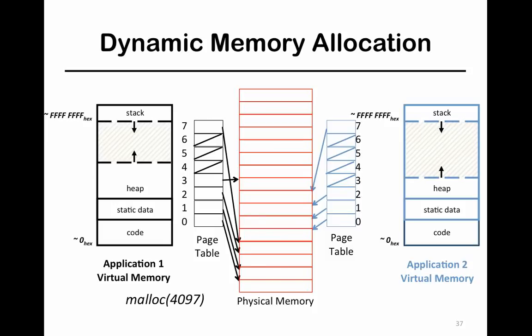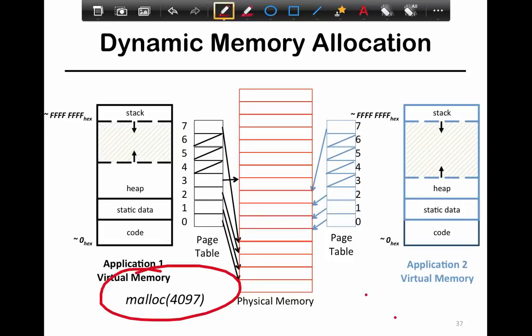If you want dynamic memory allocation, for example you want a malloc 4097, then what you would do is call that, and then what really happens is it bends out a chunk from the heap.